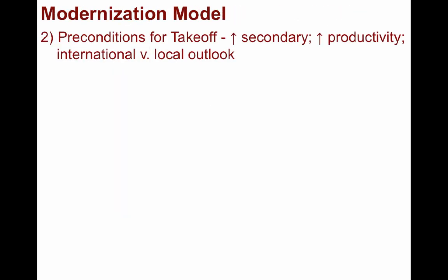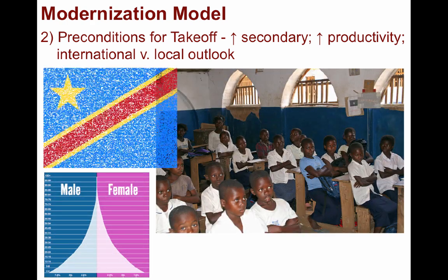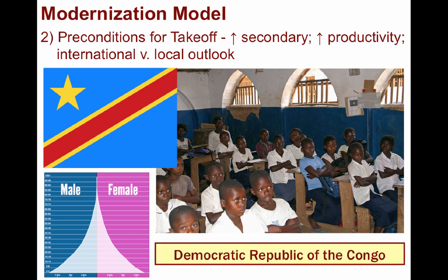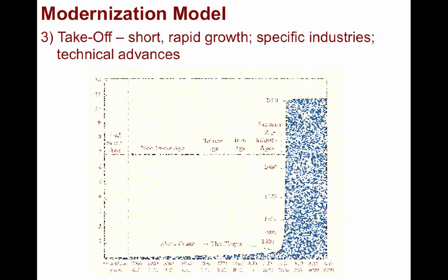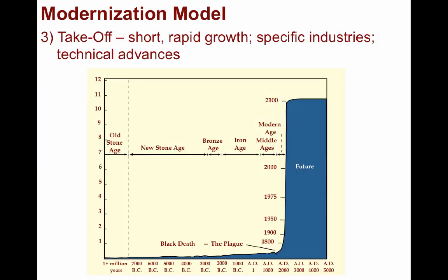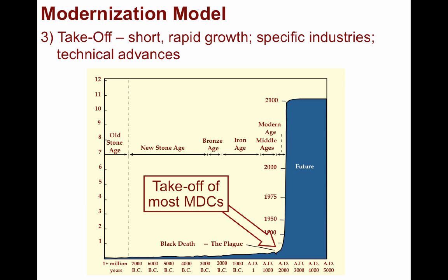The second stage is preconditions for takeoff. Three important facets for change happen at this juncture. First, there is a slow shift from primary to more secondary activities and jobs. Second, investments are made toward industry and infrastructure, leading to more productivity and growth. Third, the country expands its outlook to an international scale, increasingly trading and negotiating with foreign nations. Many peripheral states are in this stage, such as the Democratic Republic of the Congo. The third stage is takeoff, characterized by rapid and sustained economic, political, and technological growth. Usually specializing in a few industries, the country experiences something akin to an industrial revolution, where growth and change become second nature, especially with the emergence of an entrepreneurial class.